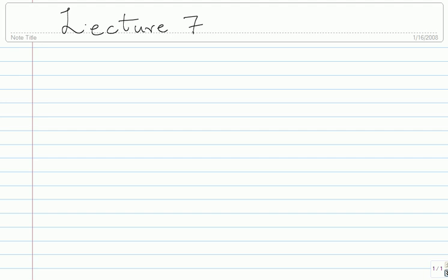We have been looking at linear block codes and I want to remind you of a number of things you should know. The first thing is you should be very comfortable with the two matrices G and H in linear codes. You should know their dimensions, their rank, the relationship between all these quantities — the row space of G, the row space of H, which will be the dual, all of those things.